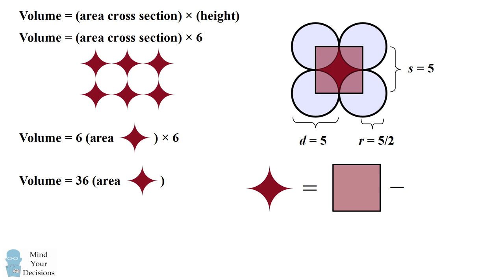Now 4 quarter circles together make one whole circle. The area of the square is equal to s squared, and the area of the circle is equal to πr².